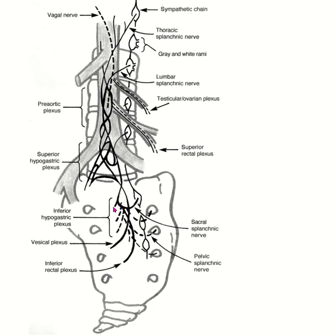Sympathetic stimulation from the inferior hypogastric plexus causes contraction of smooth muscle in the vas deferens during ejaculation, facilitating propulsion of sperm from the epididymis to the ejaculatory duct. The parasympathetic supply arises from the pelvic splanchnic nerves at sacral S2 to S4. These nerves also contribute to the inferior hypogastric plexus, but their role in the vas deferens is less prominent than that of the sympathetic nerves. Sensory innervation travels back along the sympathetic pathway from T10 to L2.